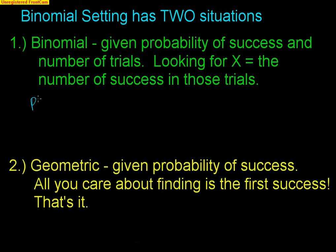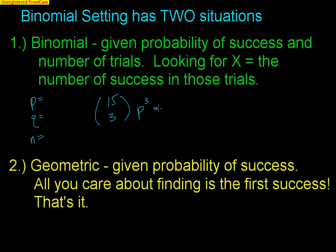If you know your probability of success P, you also know your probability of failure Q. And likewise, you are told your number of trials. So we could say, if you have 15 people and we're looking for exactly three successes, that would be P to the third times Q to the 12th. That's the probability that you have exactly three successes out of 15. Easy.